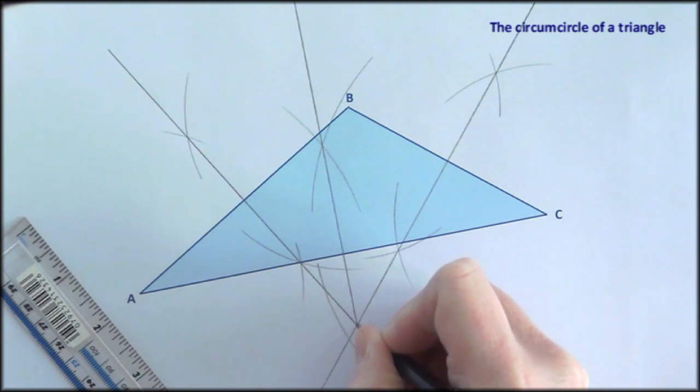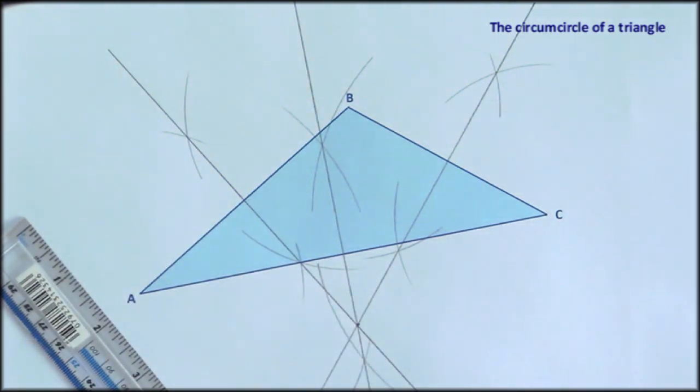So this point, the intersection point of all three perpendicular bisectors, is the centre of the circumcircle, what we call the circumcentre.